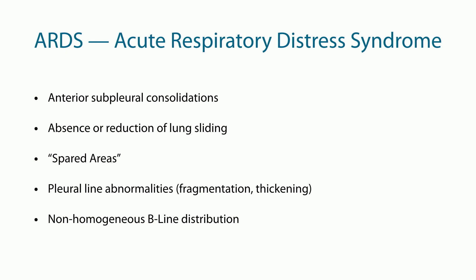To summarize what we can see on lung ultrasound in ARDS: we see anterior subpleural consolidations, which can appear all over the lungs. We see an absence or reduction in lung sliding. We see spared areas alongside white areas resembling B-lines or confluence of B-lines next to normally aerated lung. And we see fragmentation and thickening of the pleura, with a diffuse distribution of B-lines throughout the lung.